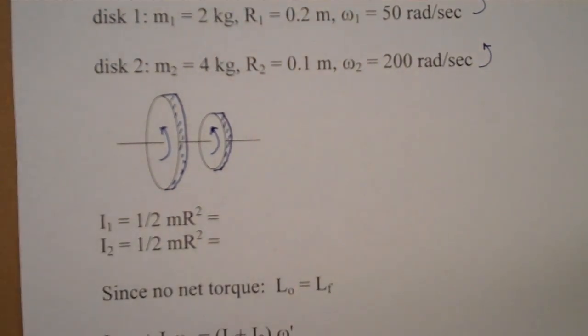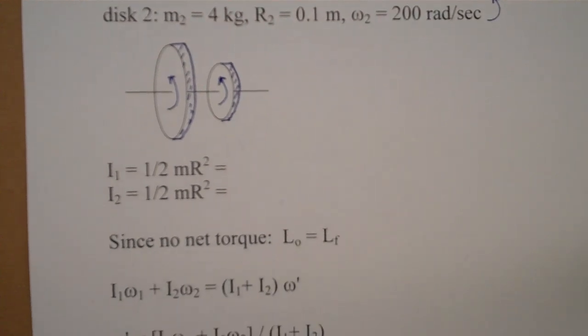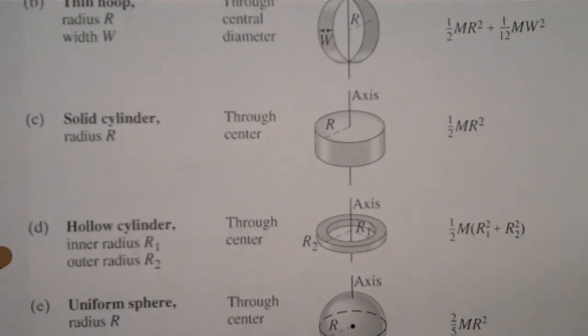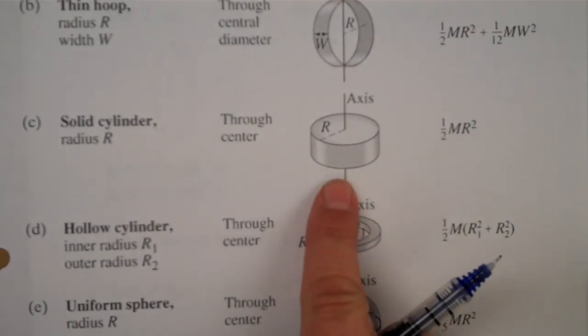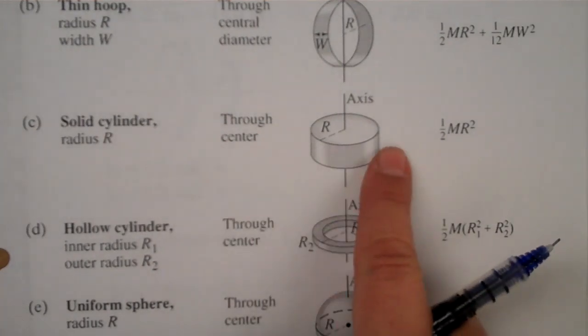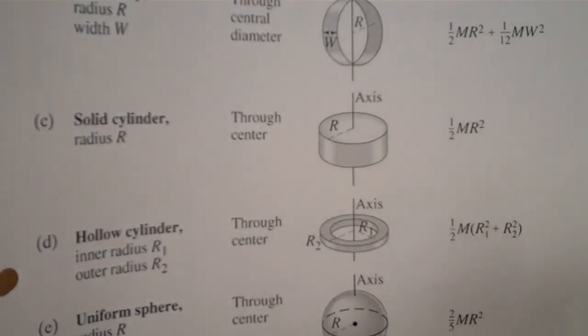So if we draw a picture, it would look something like this. We have a collision that's occurring. We're asked to find the final speed after the collision, so we know this is going to be a momentum problem. The first thing we'll need to do is calculate the moments of inertia for both disks, and if we look at our chart for a solid cylinder rotating through its center, and in this case it's horizontal,